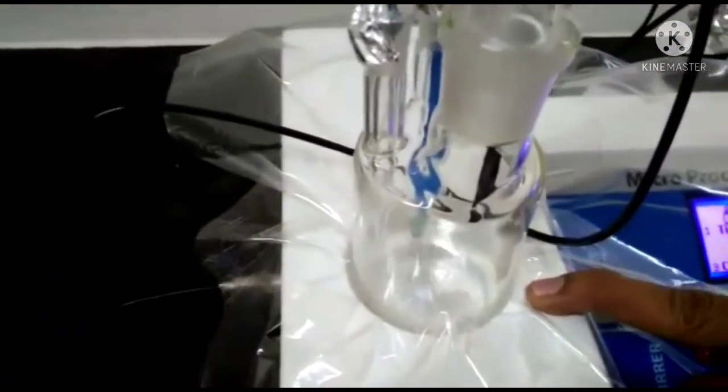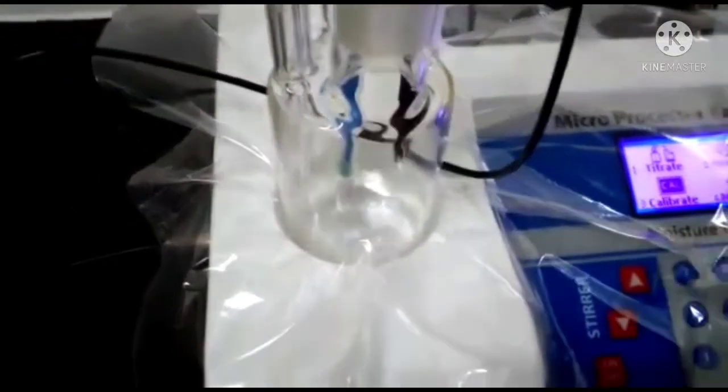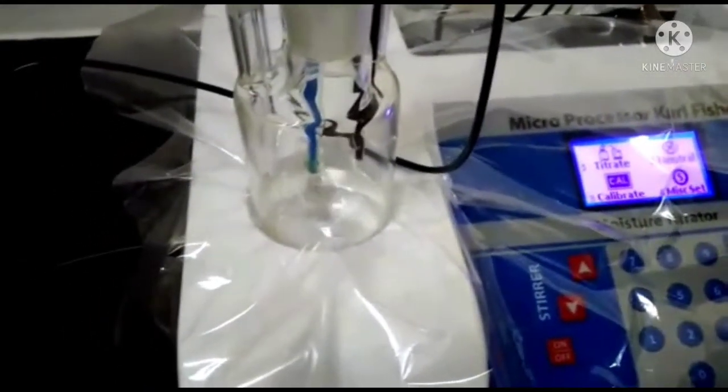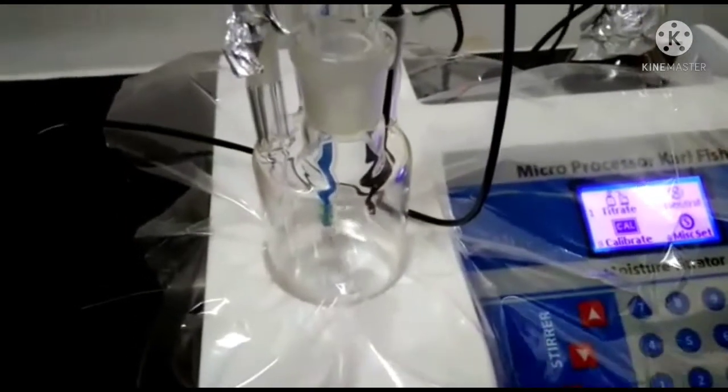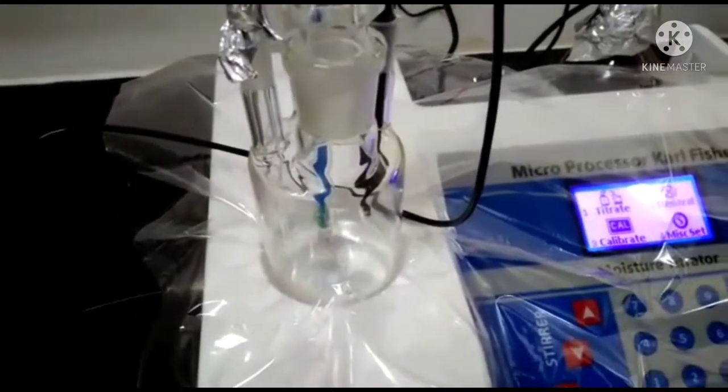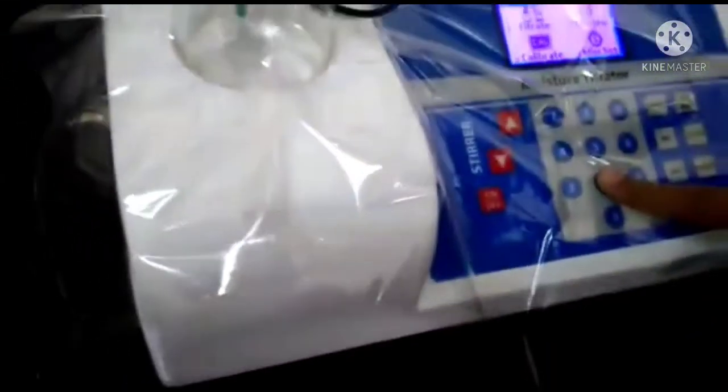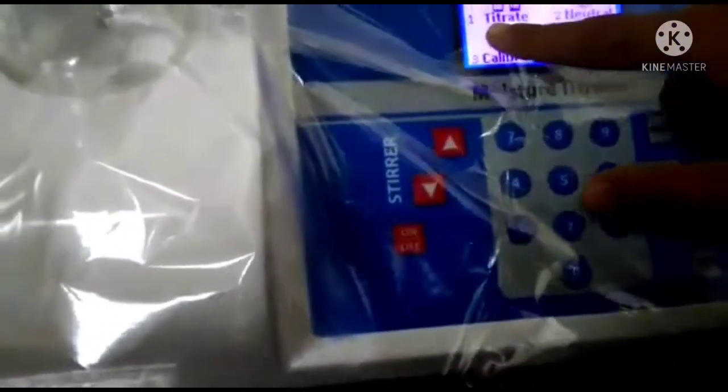So basically I have filled dried methanol inside the titration vessel and I just started the stirrer. We have to wait for a little bit around 30 seconds to let it stabilize and after that first we have to go for the neutralization to neutralize the methanol.